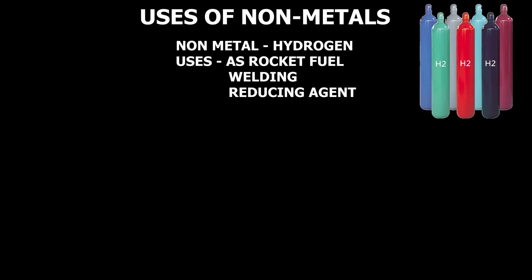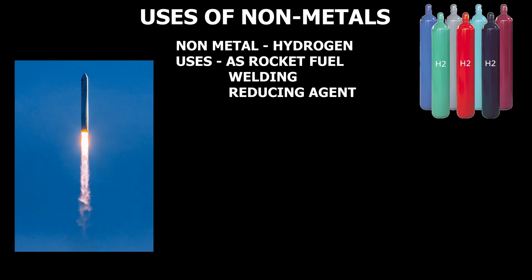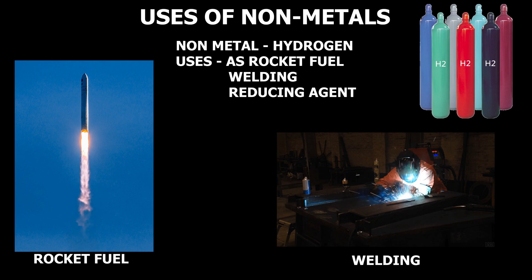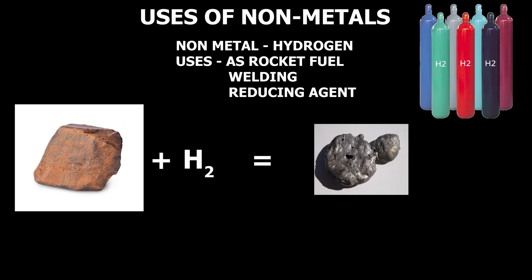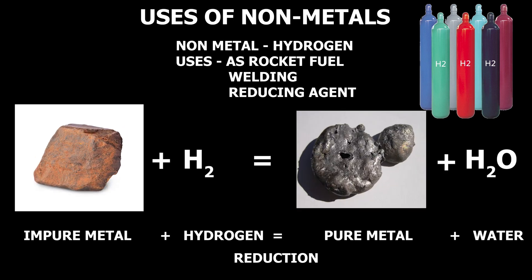Hydrogen is used as a rocket fuel and hydrogen flame is used for cutting and welding purposes, as well as a reducing agent. Reduction is the process by which pure metals are obtained in a chemical reaction.